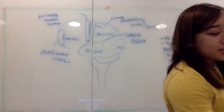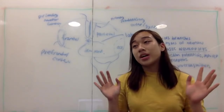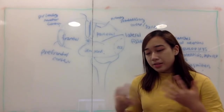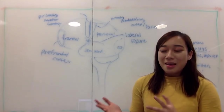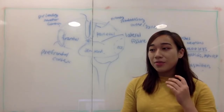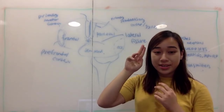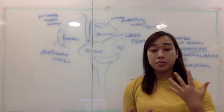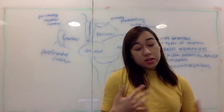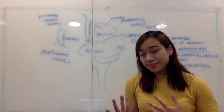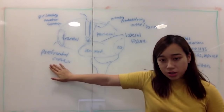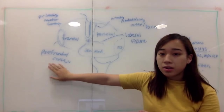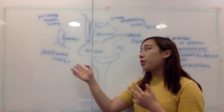Phineas Gage was a railroad worker, and what happened is that a pole flew out and went straight through his prefrontal cortex. What happened is that he had major personality changes — he became a lot angrier, with less social inhibition. So that's what the prefrontal cortex is in charge of: aspects of emotion, personality, and higher order thinking.